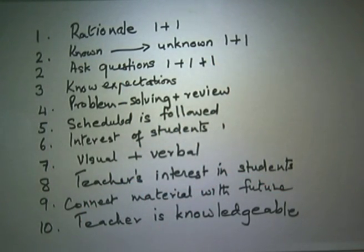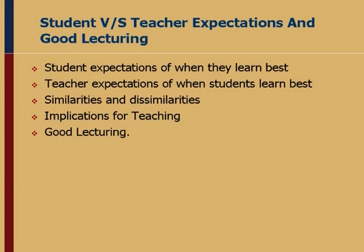Before sharing the actual results, the speaker provides background: 107 teachers from Purdue University's chemistry department and 106 teachers from California State University Hayward — about 211 teachers in total — completed this questionnaire, identifying the five most important and five least important items for student learning.